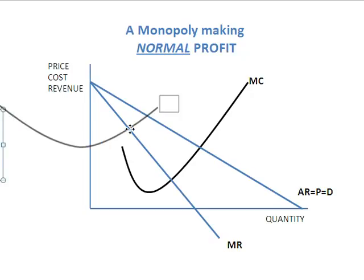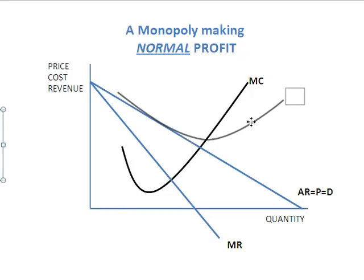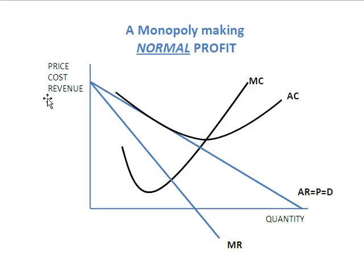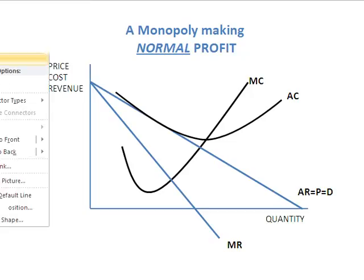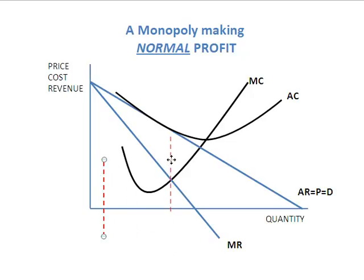This time we pick up the average cost curve and position it around about there. The minimum is still cutting the marginal cost curve, but its particular position is quite important. When I pick up my vertical line — make that vertical, run that up through there.